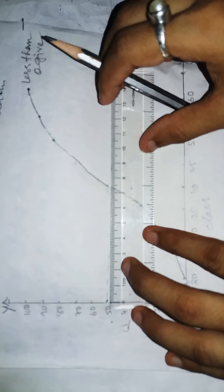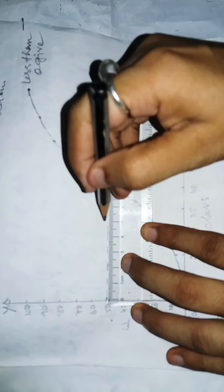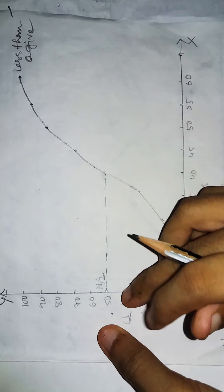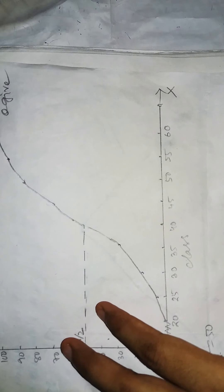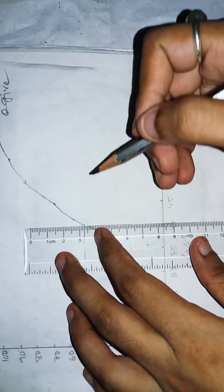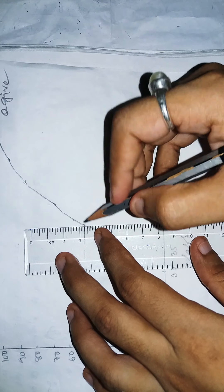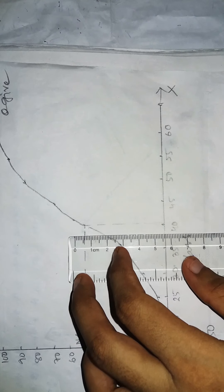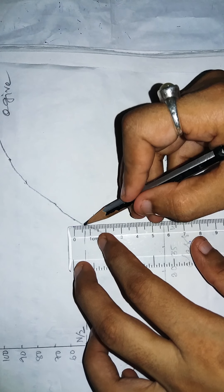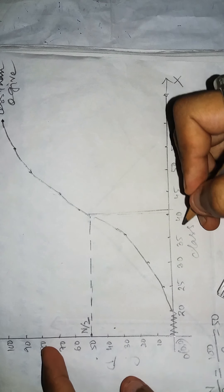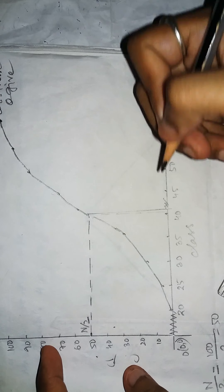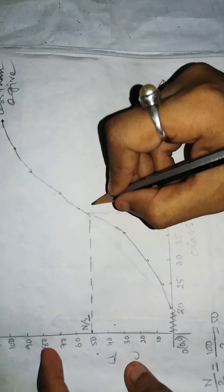So first, plot the value of n by 2, then draw a perpendicular to the less than ogive. The intersecting point of this perpendicular, from there draw another perpendicular to the x-axis. The abscissa of this point will be the median.